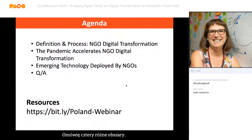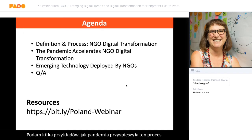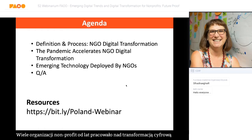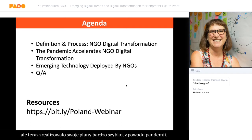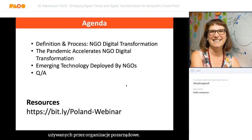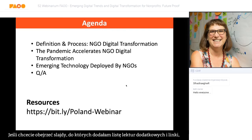For the webinar I want to cover four different areas. I'm going to talk about the definition and process for NGO digital transformation. I'm going to share some examples of how the pandemic has speeded up NGO digital transformation in the last two months. Then some examples of emerging technology being used by NGOs. We'll leave time for questions — please ask them in the chat. The slides and additional reading and links are all at that Bitly URL.